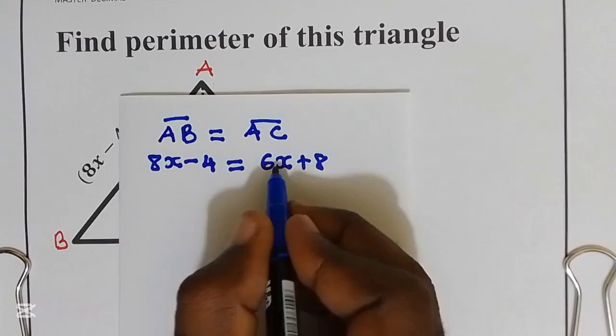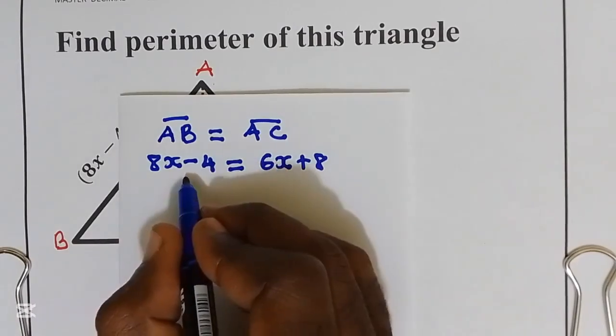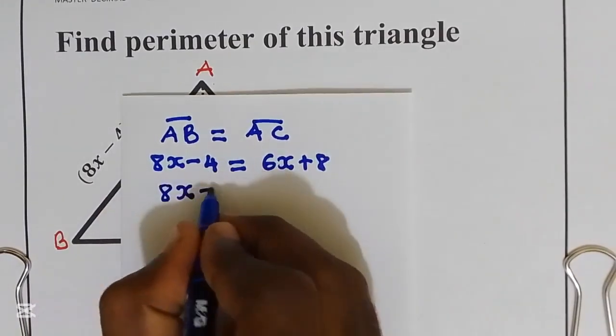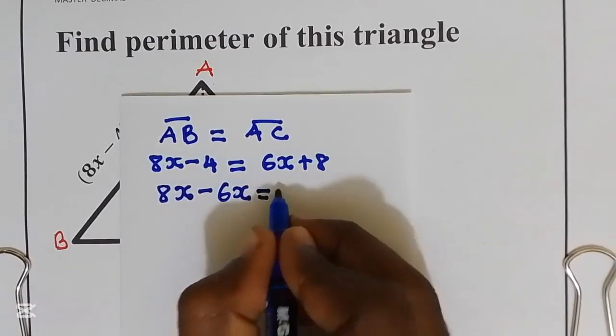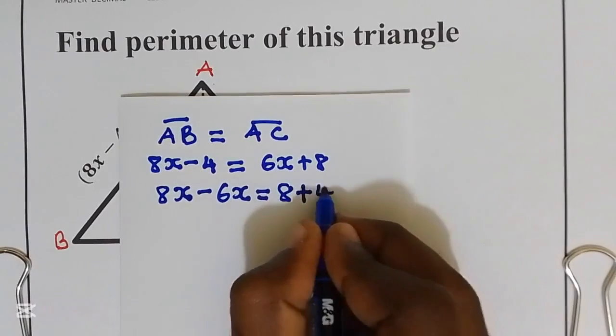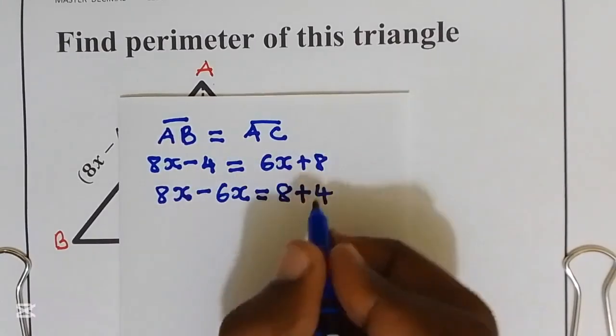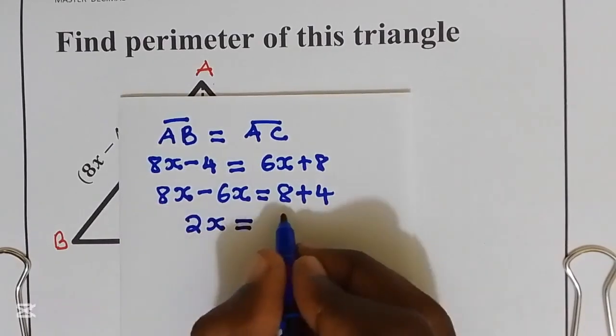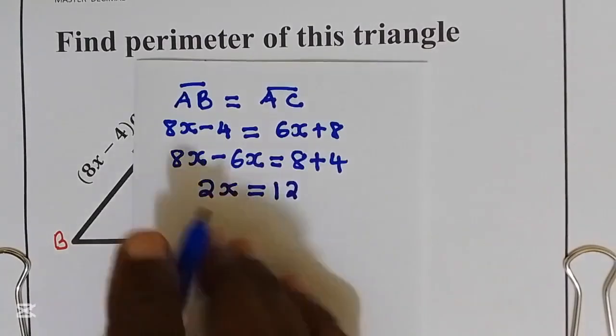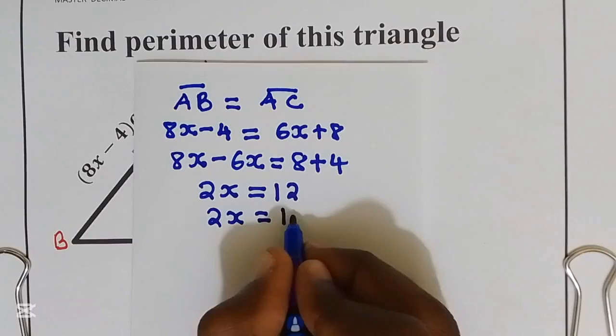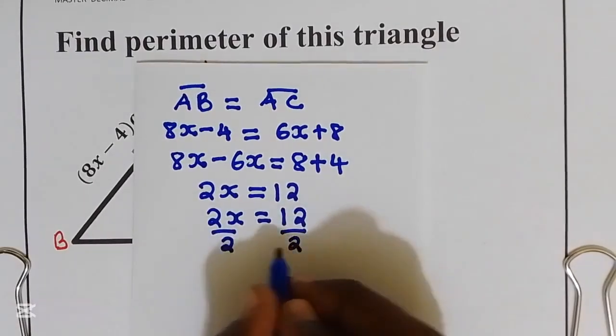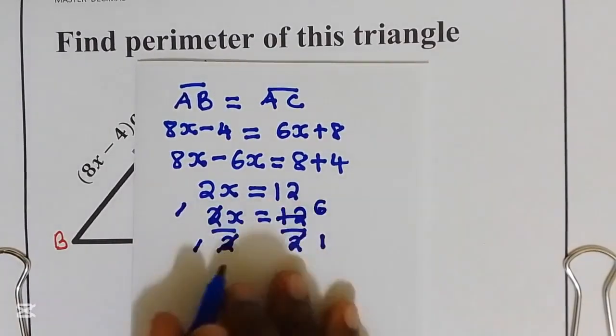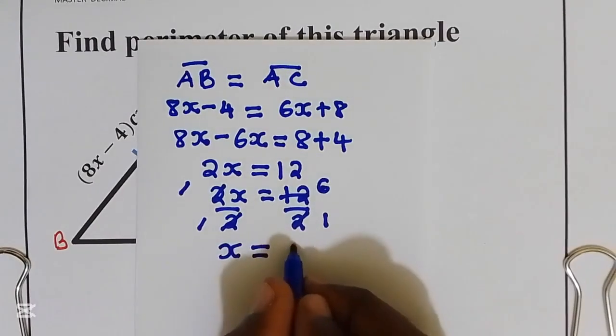Let us solve for X. I'll bring 6x to the left-hand side and minus 4 to the right-hand side is going to be positive. 8x minus 6x, this is equal to 8 plus 4. 8x take away 6x, I got 2x. This is equal to 8 plus 4, it is 12. 2x is equal to 12. I'll divide by 2, I'll get X is equal to 6.